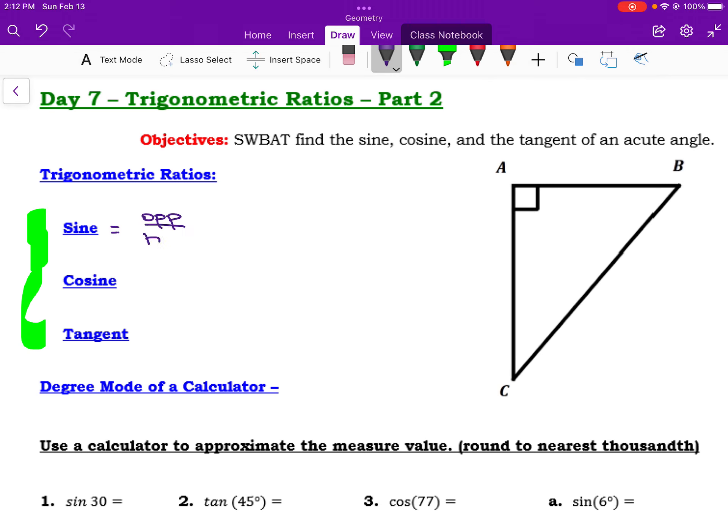Once we have designated theta, we define our sine to be opposite over hypotenuse, cosine to be adjacent over hypotenuse, and tangent to be opposite over adjacent. Remember, those are designations with respect to theta.